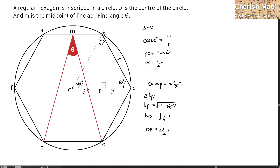By looking at the length of BD, it is in fact twice the length of BP. So BD equals 2 times BP. The value of BD is therefore √3 R.